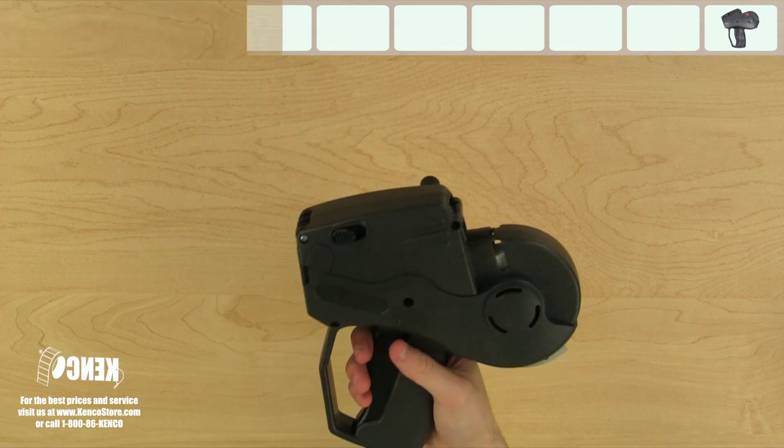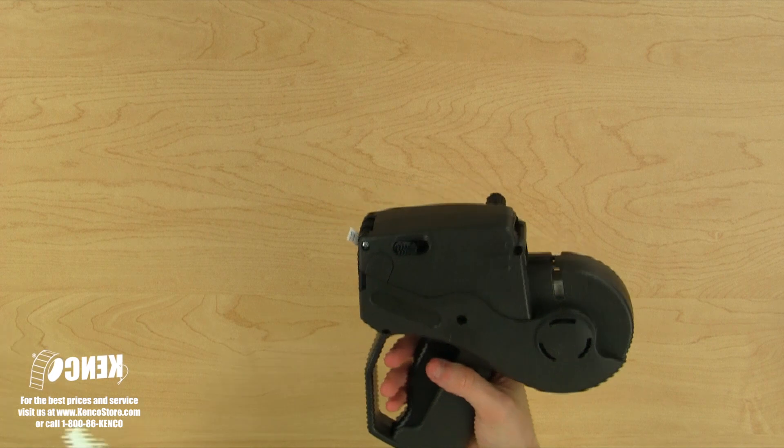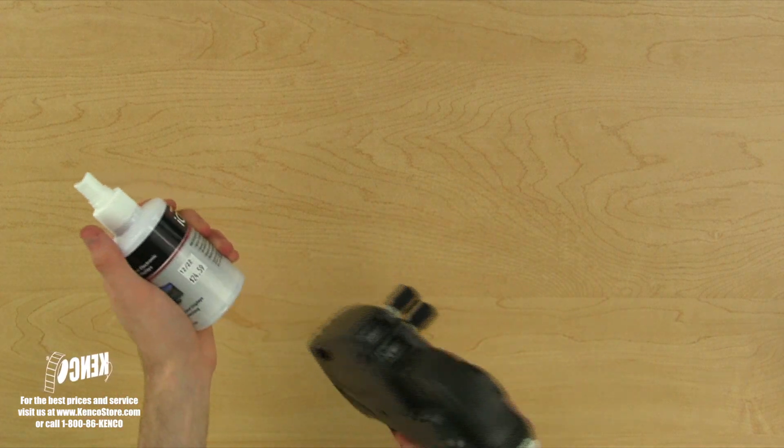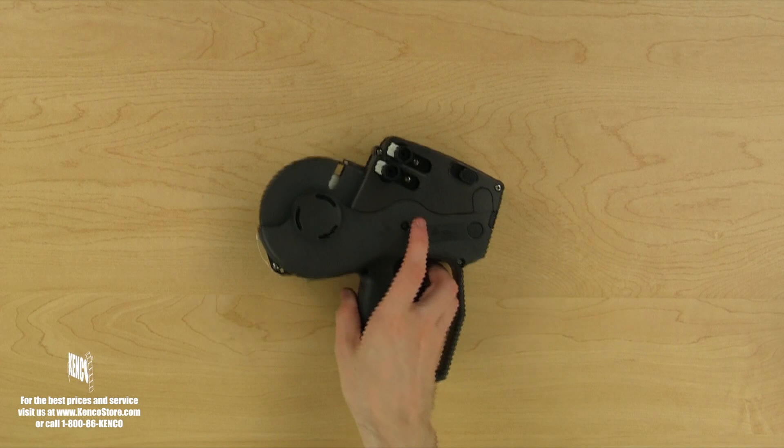To label an item simply pick up the gun squeeze and release the trigger once hold the price gun directly over the product then just roll the label on your product and you're all done.